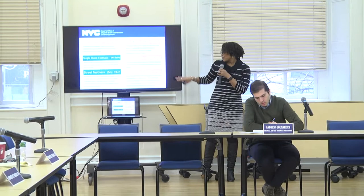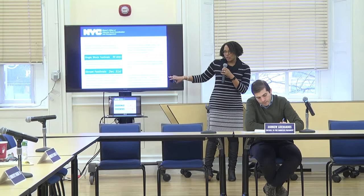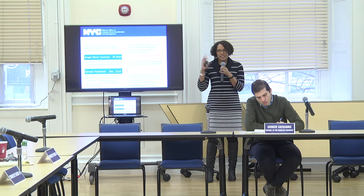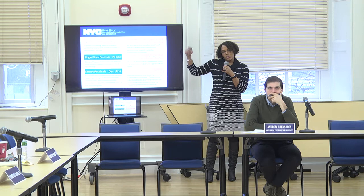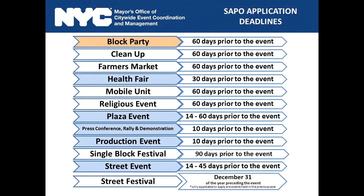Production events are new — this used to be called 'extra small' but it's specifically for loading in and out of a venue: a truck parked loading in and out, or queuing on a sidewalk to get in and out of a venue. That's all production is. Everything else falls under street events, which vary in size: small is use of a sidewalk or curb lane, medium is a sidewalk and curb lane, and large is a street closure.